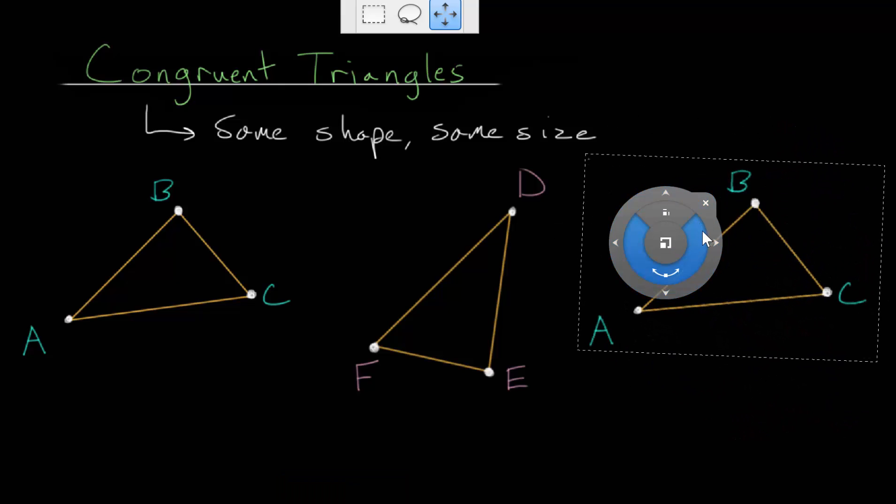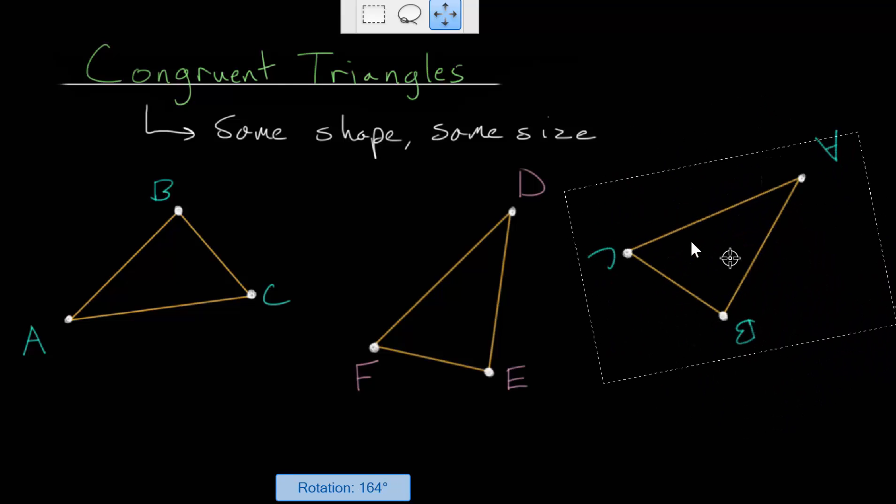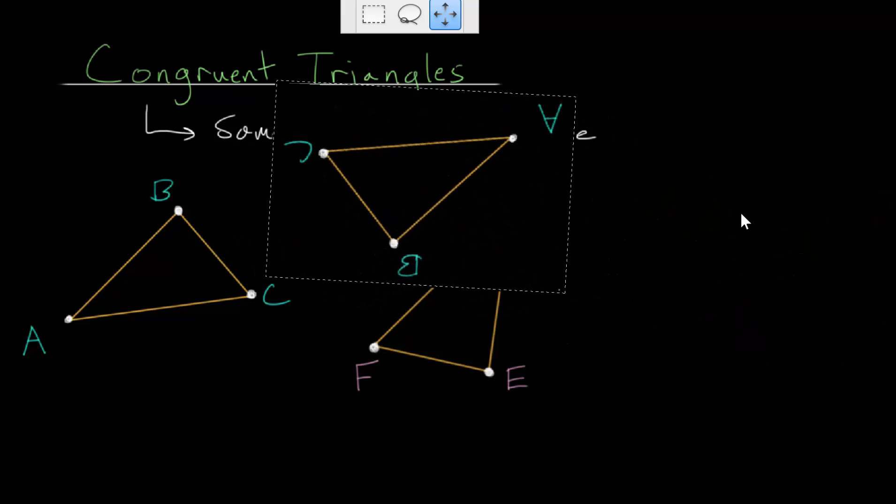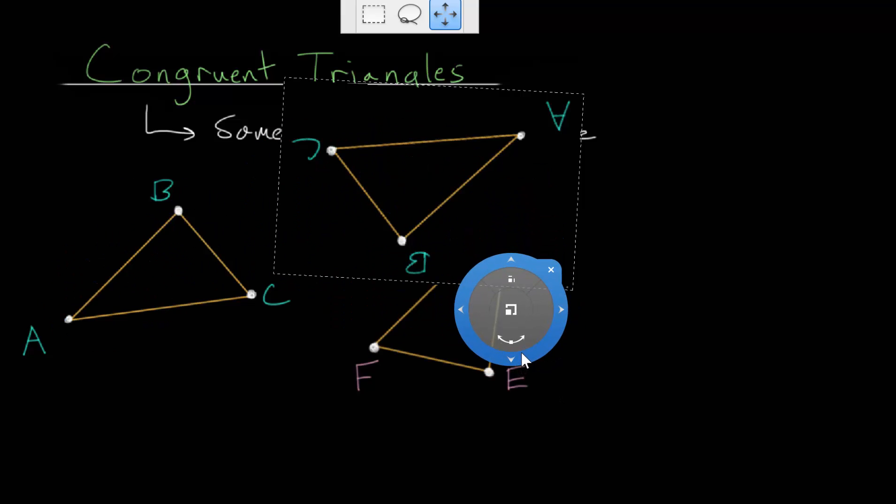And if we reflect the triangle, and this one I don't have a tool to do that, but we can imagine that original line that I drew and reflecting it maybe through a line right in the middle of these, then these two triangles will still be congruent.